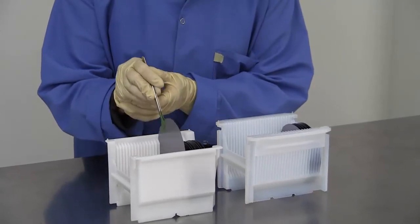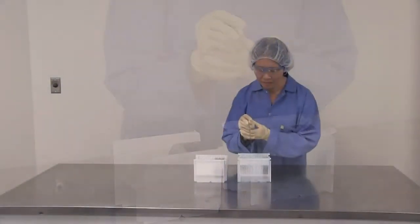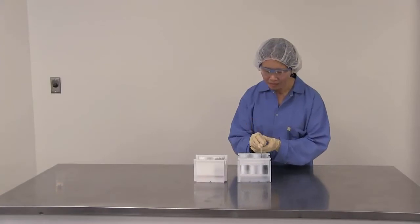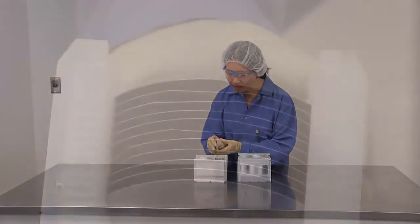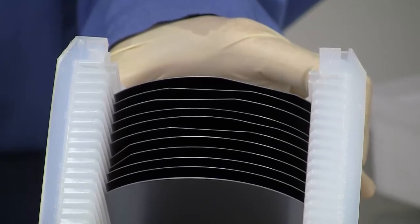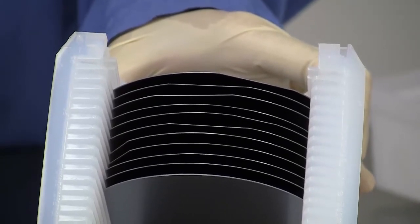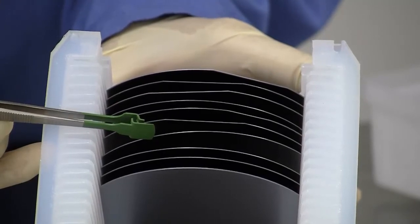It is also best practice if you place the cassettes so that you can avoid working over the wafers. This helps to minimize contamination. Here is an example of properly slotted wafers, with all the wafers lined up and parallel to each other. And here is an example of cross-slotted wafers.